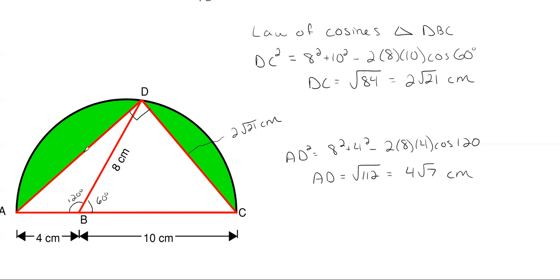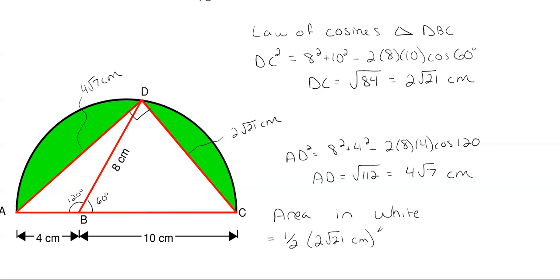Now that I have both sides, I can find the area of the white triangle using one-half base times height, since this is a right triangle. Area in white = ½ × 2√21 × 4√7 = 28√3 centimeters squared.